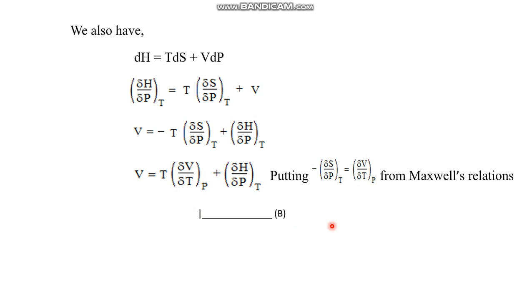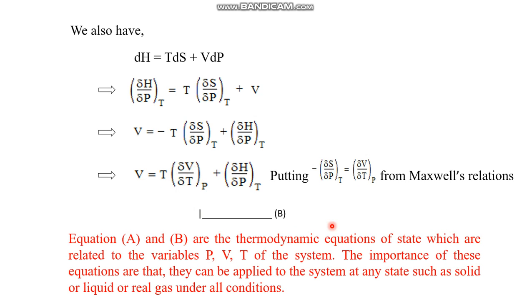In conclusion, Equations A and B are the thermodynamic equations of state, which relate the variables pressure, volume, and temperature for any system. The importance of these equations is that they can be applied to a system at any state — solid, liquid, or real gas — under all conditions, and also to ideal gases. That's all for this topic. Thank you, have a nice day.